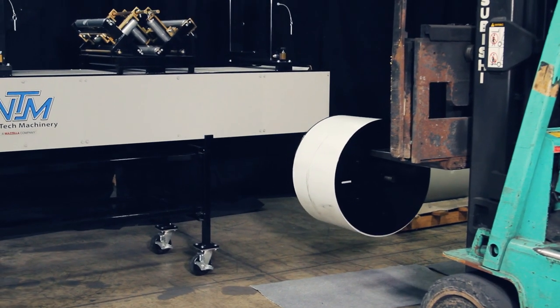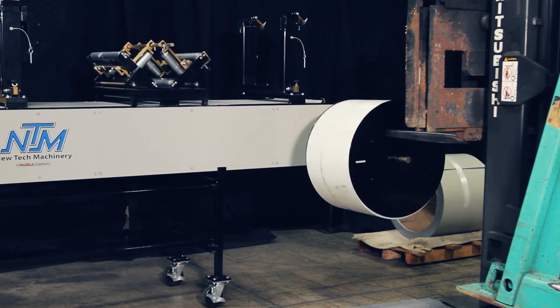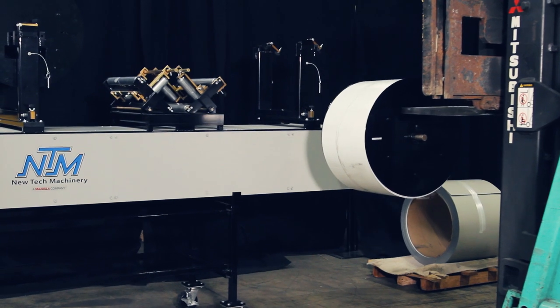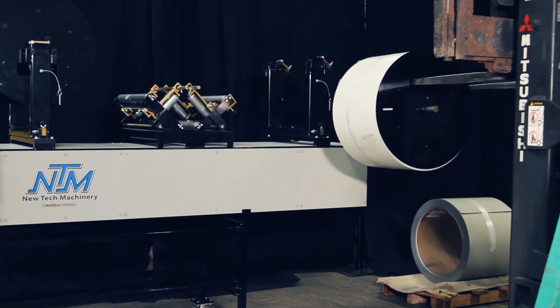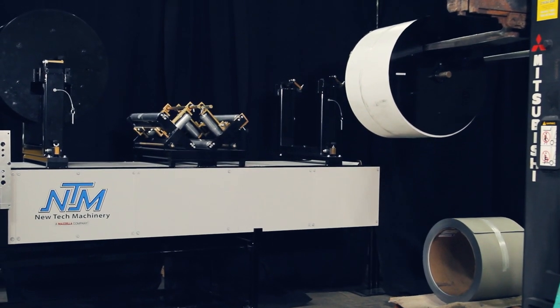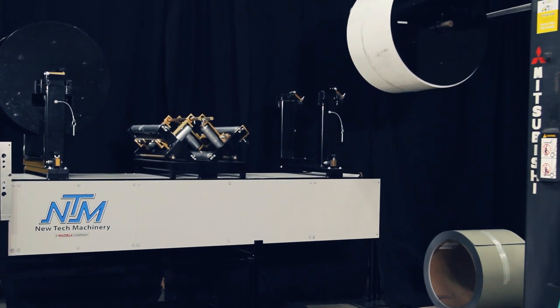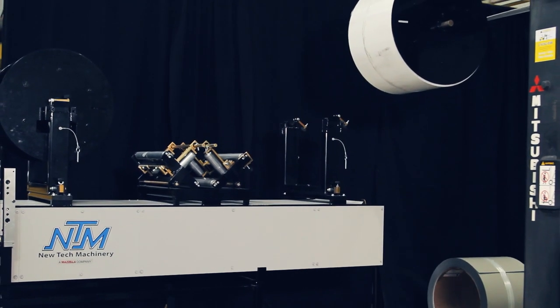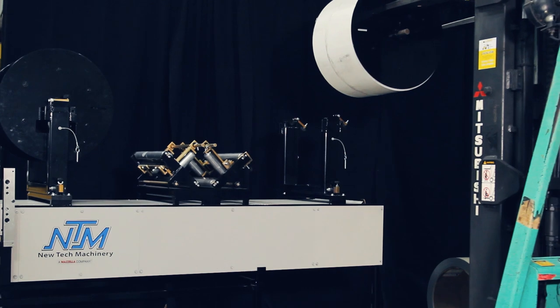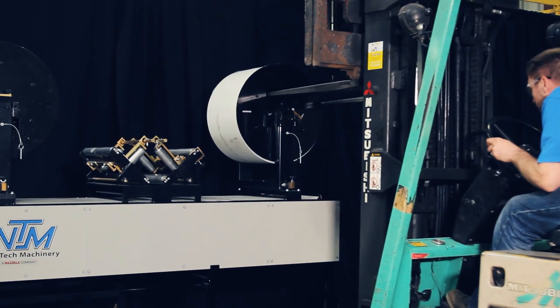Lift the coil and position it over the turnstile and slowly drop it into place to where the end of the shafts are in the turnstile. This might also need the help of a second person to help guide the reel down and into the turnstile. Back out of the reel and lower the forks.